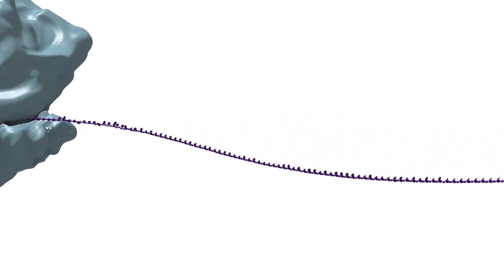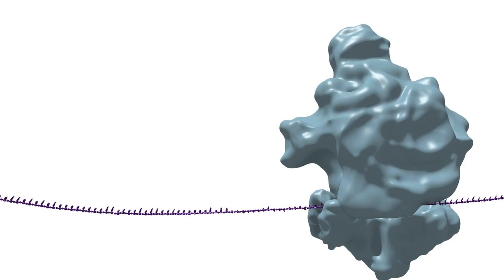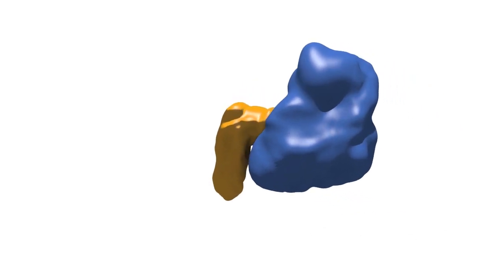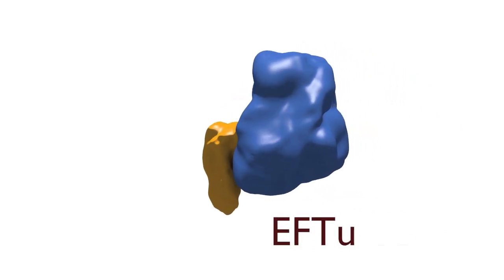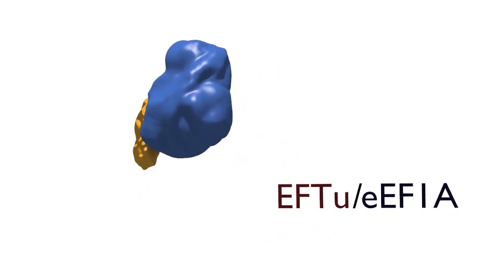After initiation is complete, the ribosome is ready for iterated rounds of amino acid addition. This phase, referred to as elongation, can be broken down into three basic steps. In the first step, the ribosome must select the aminoacyl tRNA that corresponds to the codon poised in the A site of the ribosome. This step is facilitated by the GTPase elongation factor EF-TU in bacteria or eEF1A in eukaryotes. Simply put, the process of tRNA selection consists of two phases.